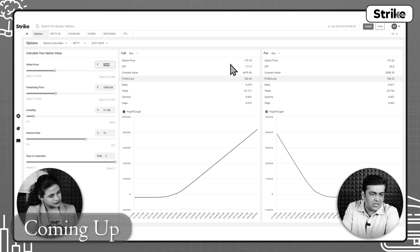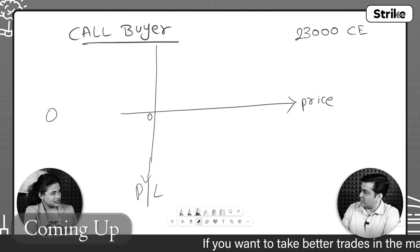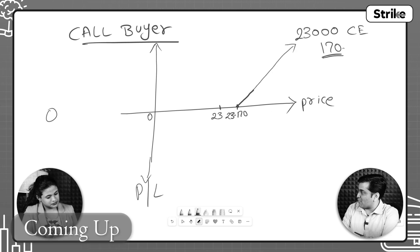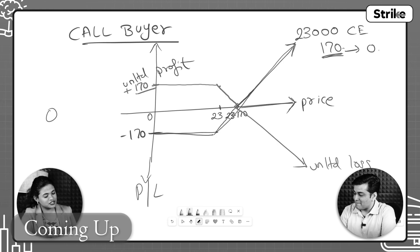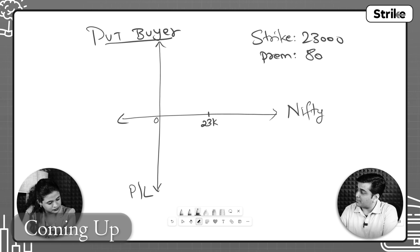Talking about these diagrams, they are called as payoff graphs — payoff profile of calls and puts. A 23,000 call option, the last traded price is around 170. In India, we have only European style options. As and when Nifty goes up, your profit will increase — unlimited profit potential. This is the mirror image. You buy a put — a put option buyer has limited or unlimited profits.